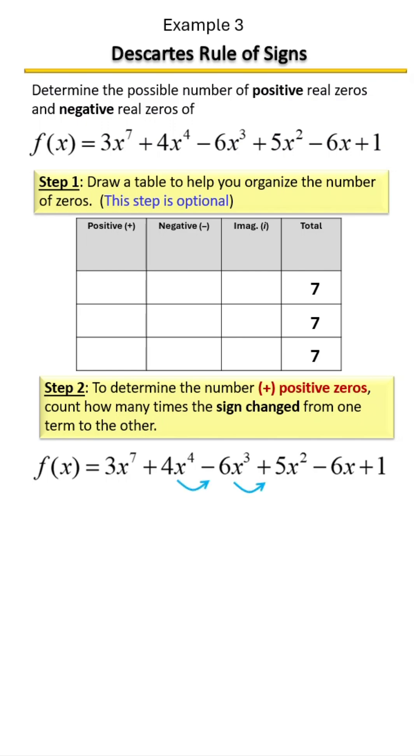From third to fourth? Yes. Fourth to fifth? Yes. And it changed one more time. So a total number of how many times did it change? Four times. So that means we have four zeros. We're going to place a four there for our positive zeros.